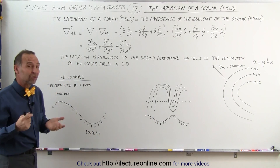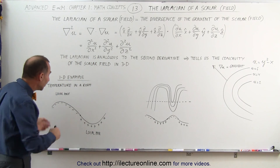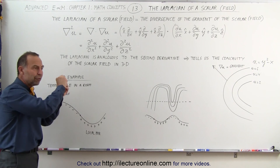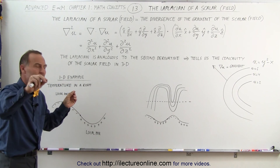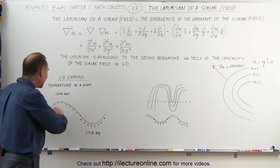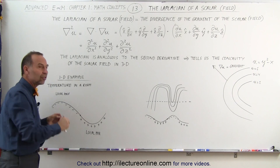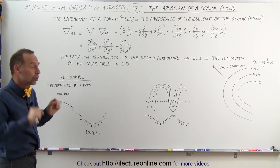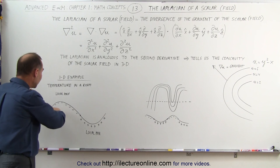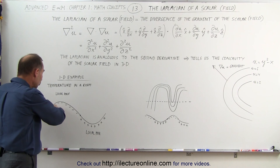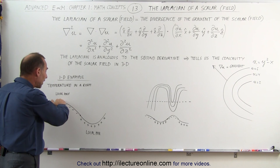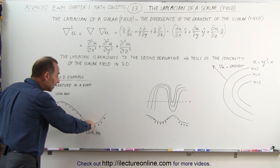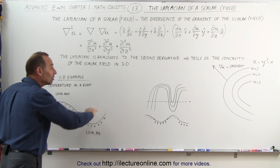A nice example: let's say we have a room in three dimensions, and we move from one location to another. This line here represents the temperature change as we go from one location to the other. Notice that the temperature is increasing, it reaches a maximum value, then begins to decrease, reaches a minimum value, and then begins to increase again.